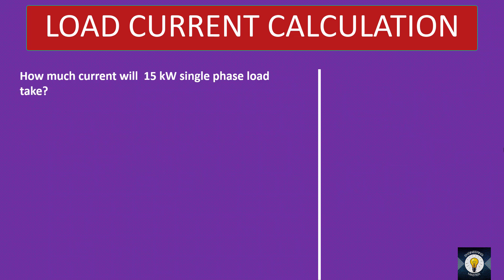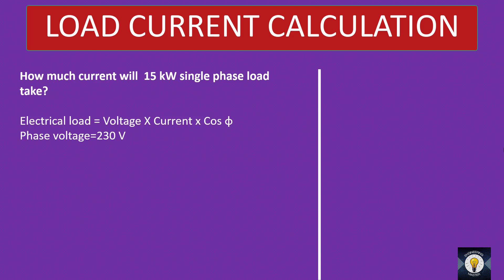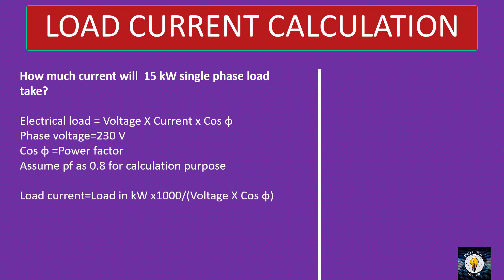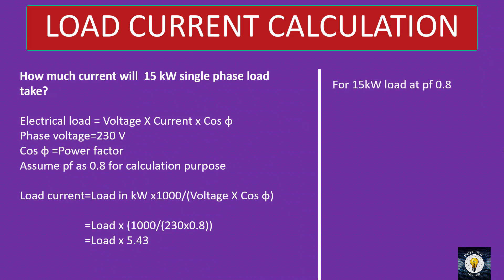In the case of single phase, let's solve a problem. What is the current consumed by a 15 kW single-phase load? For single phase, electrical load equals voltage into current into cos φ. Voltage is phase voltage — my phase voltage is 230 V. Assuming power factor 0.8, load current equals load in kW into 1000 divided by voltage into cos φ — that is load into 1000 divided by 230 into 0.8 — which gives load into 5.43. So for a 15 kW load at power factor 0.8, load current is 15 into 5.43, which equals 81.45 A.